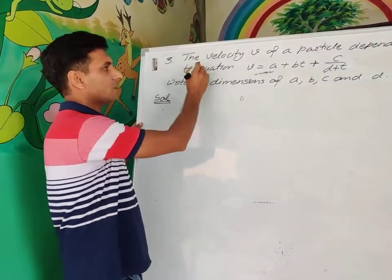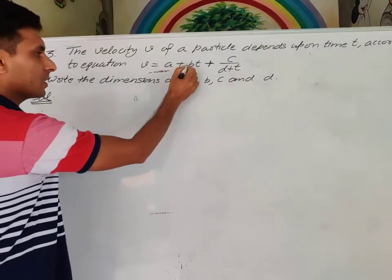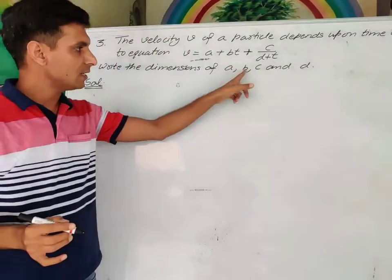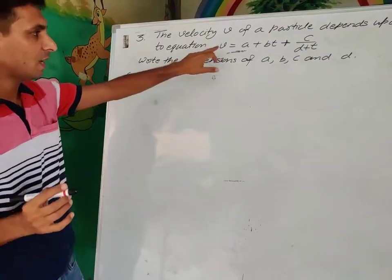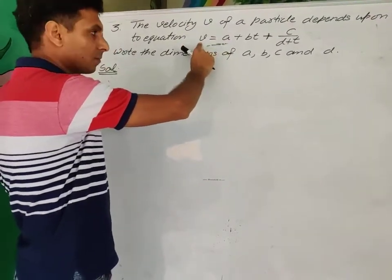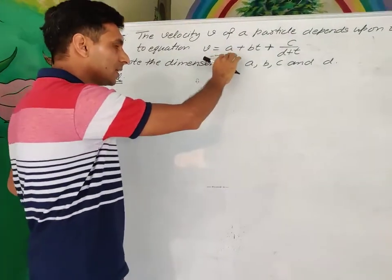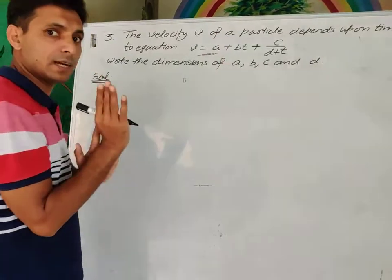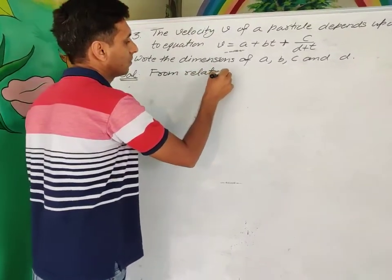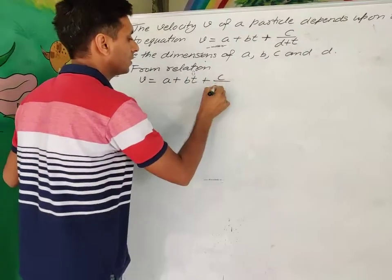Next question: The velocity V of a particle depends upon time T according to the equation V = A + BT + C/(D + T). Write the dimensions of A, B, C, and D. Since this equals velocity, every term must equal velocity. So A is also equal to velocity, giving A dimensions of L¹T⁻¹.